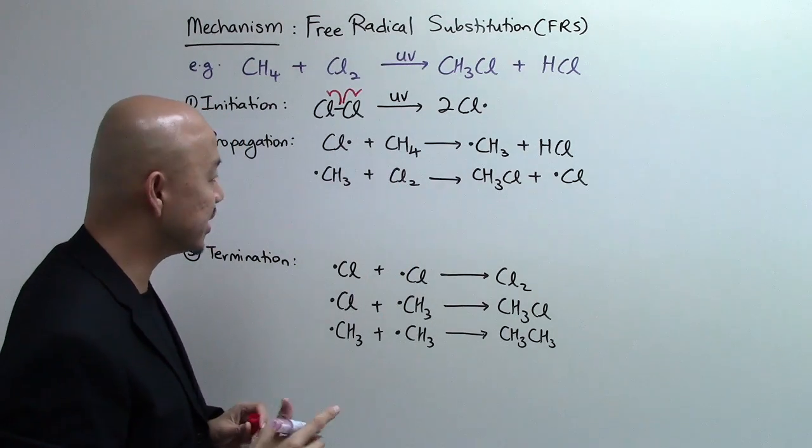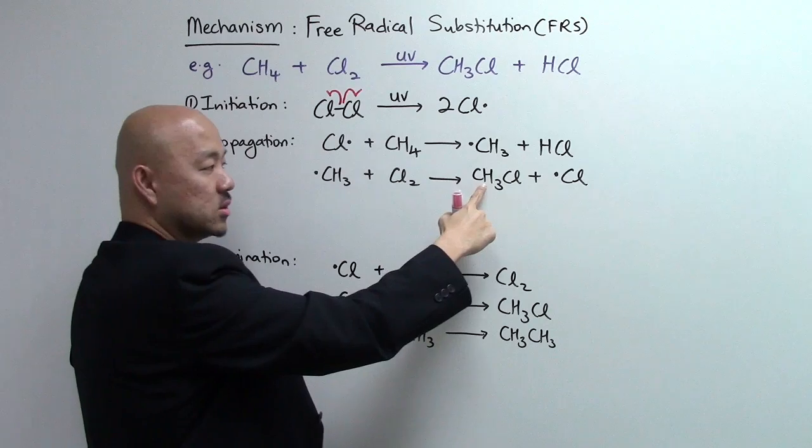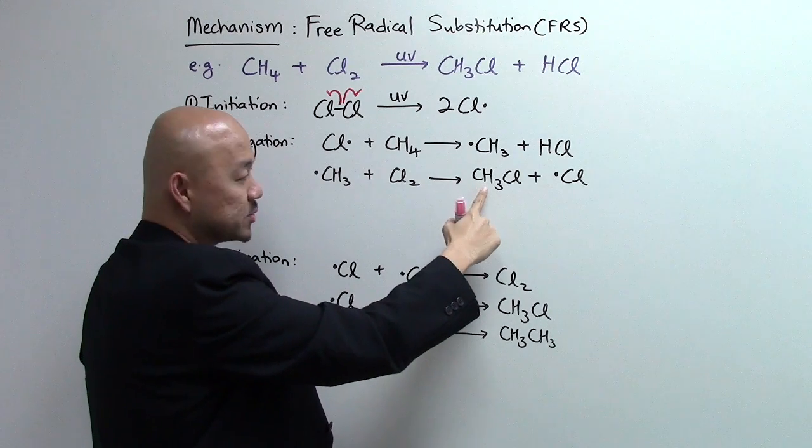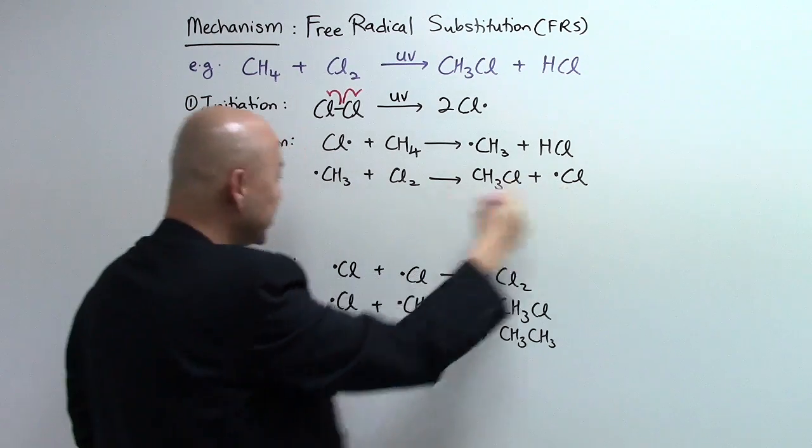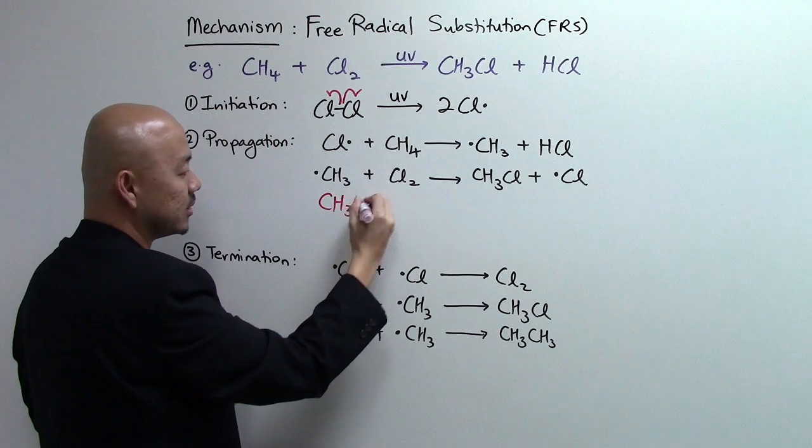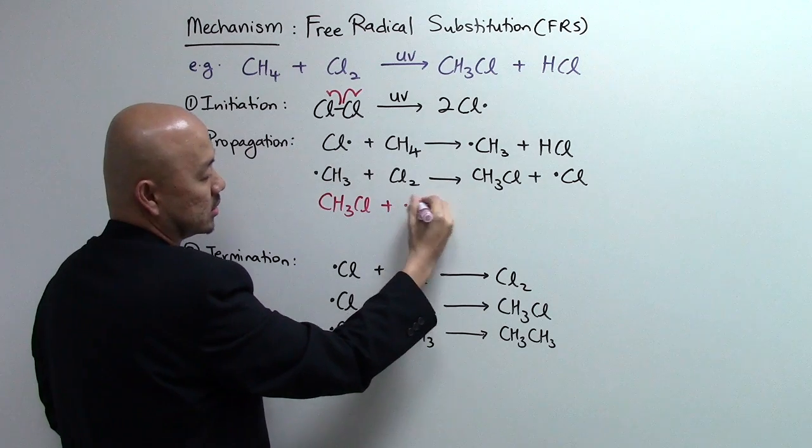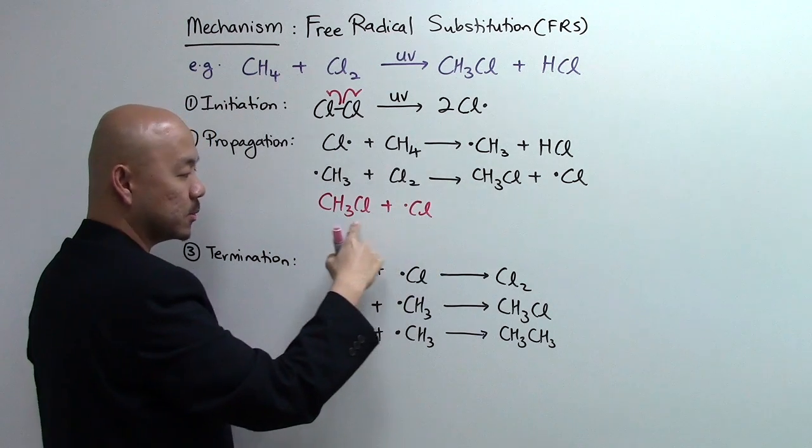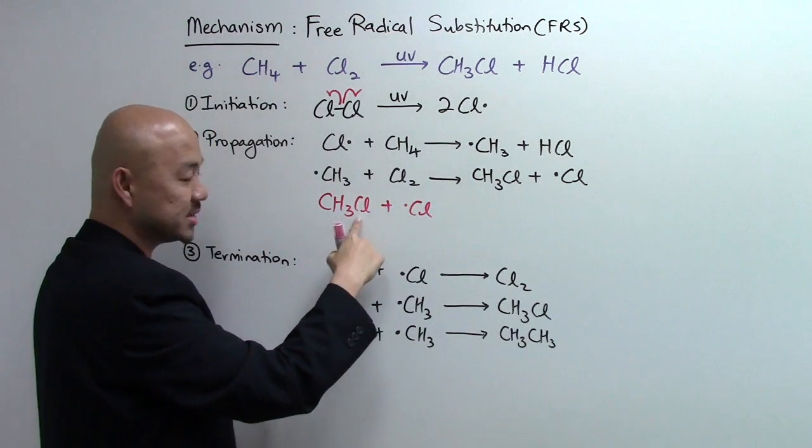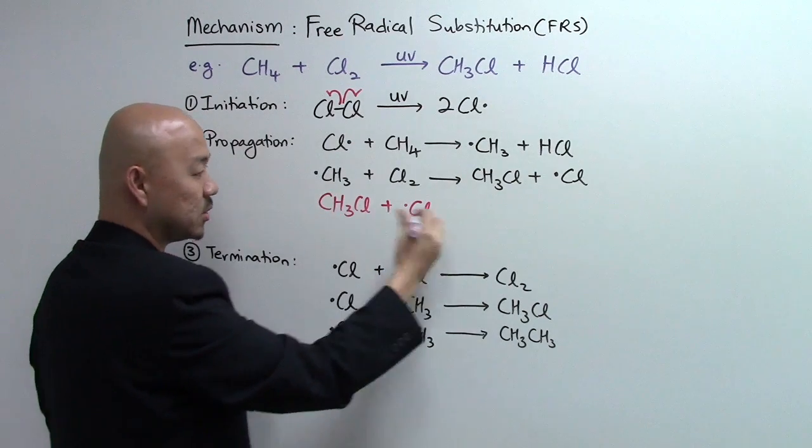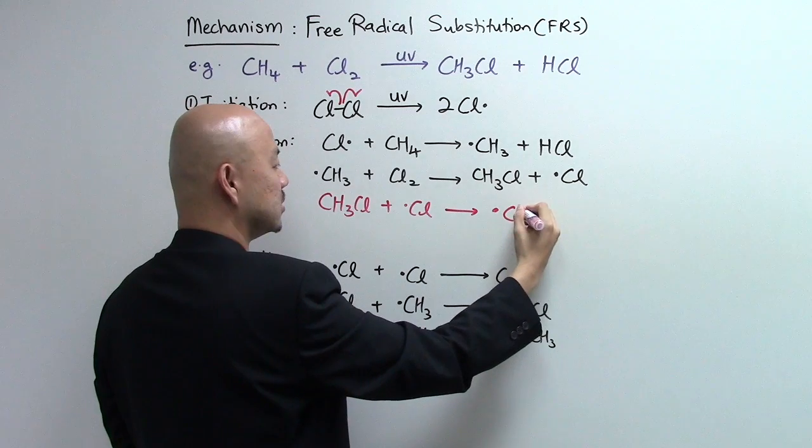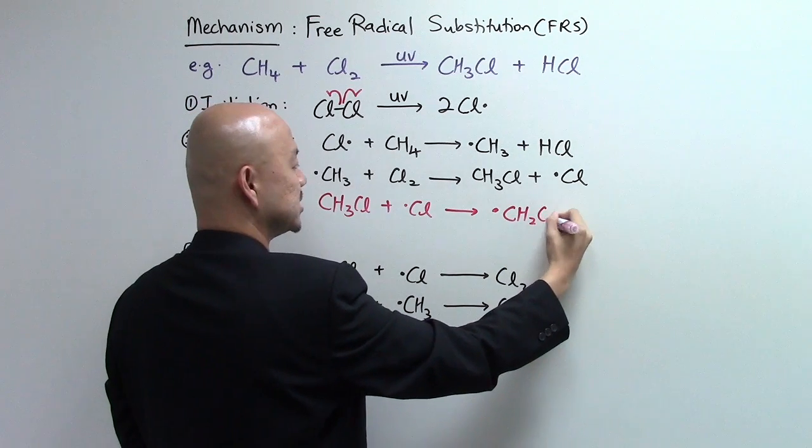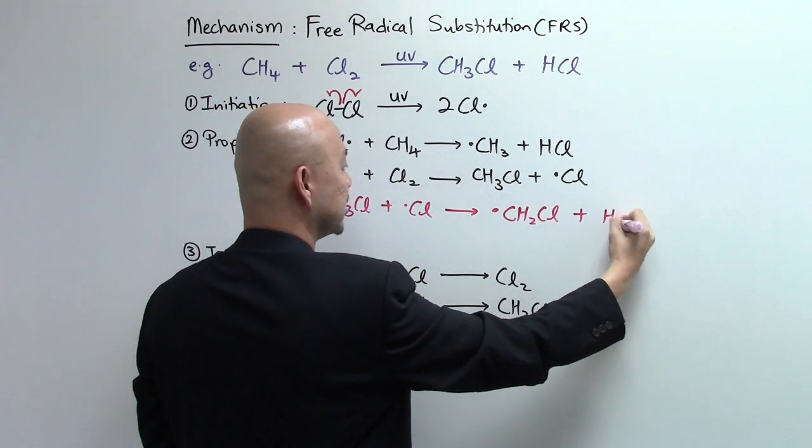What happens is that this chloromethane that was produced over here in step two of propagation may react with the chlorine radical over here. This chlorine radical will react with CH3Cl, break one of the CH bond such that you'll form a new radical called CH2Cl and HCl.